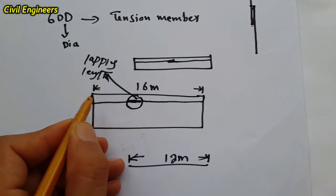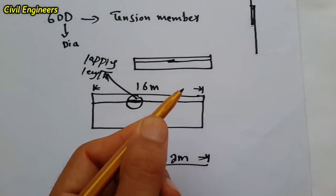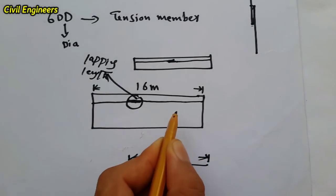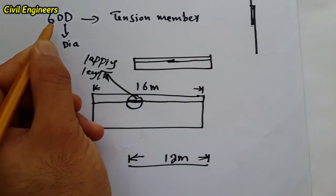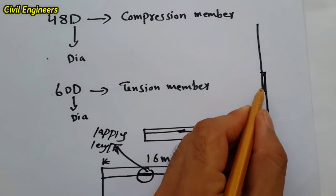We will overlap two steels with each other. This is in tension because this is a slab, so we will do it with the formula 60D for the slab and beam, and 48D for the column.